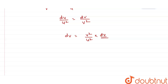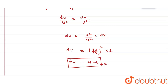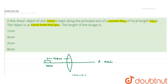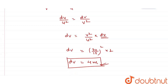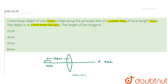The value of du is given as 1 mm, v is 30 cm, and u is 15 cm. So dv equals (30/15)² times 1 mm, which gives 4 mm. The length of the image is 4 mm. Checking the options, the second option — 4 mm — is the correct answer.